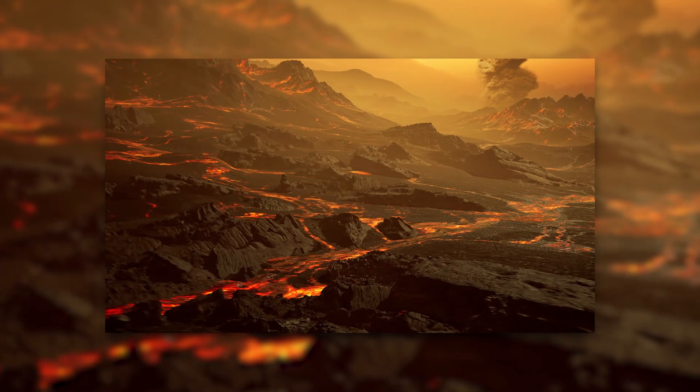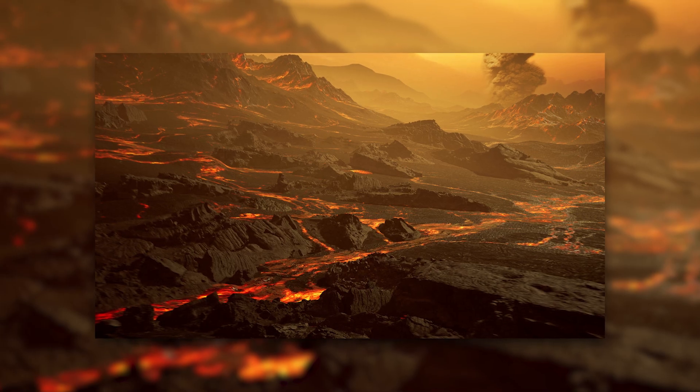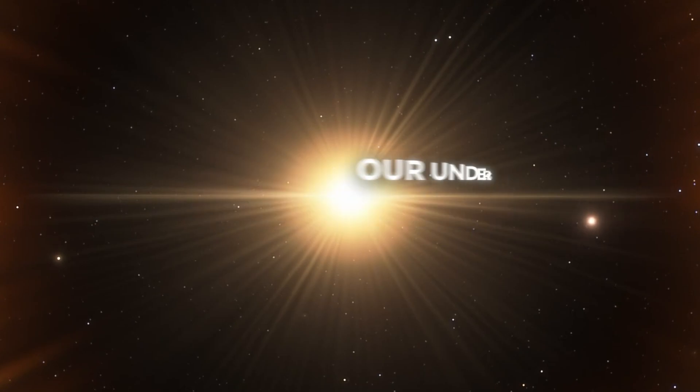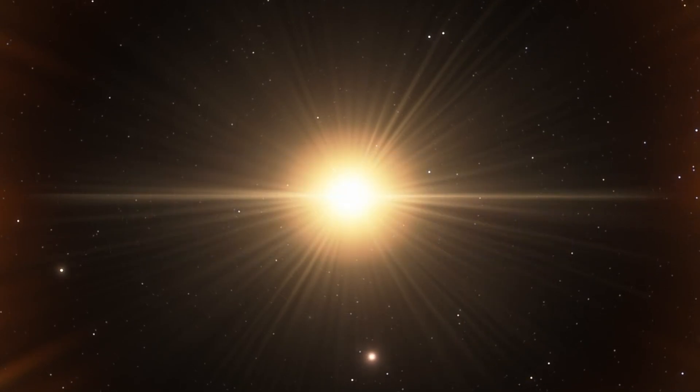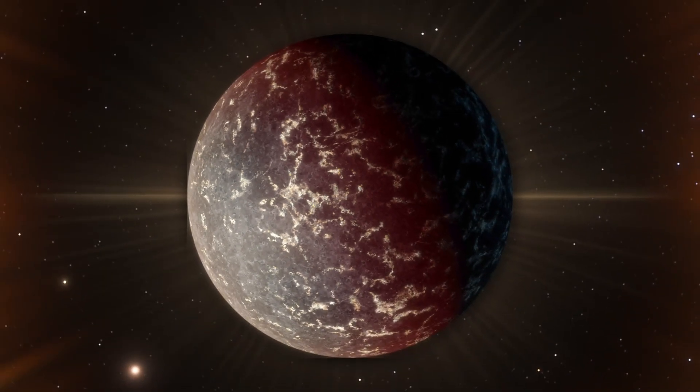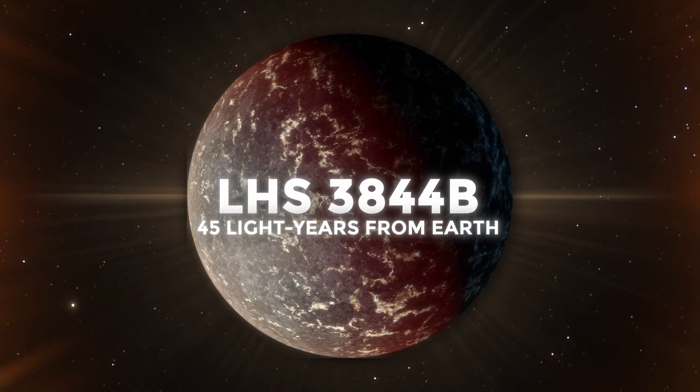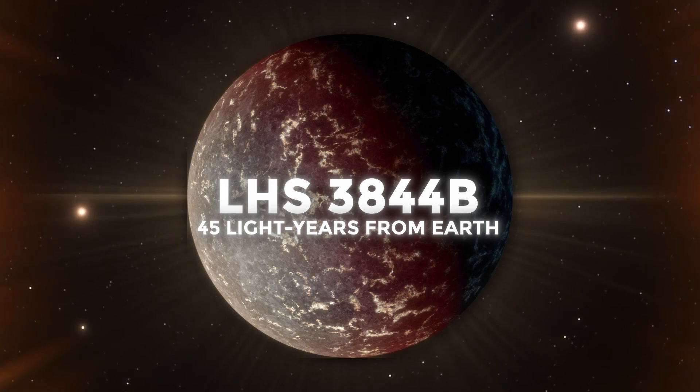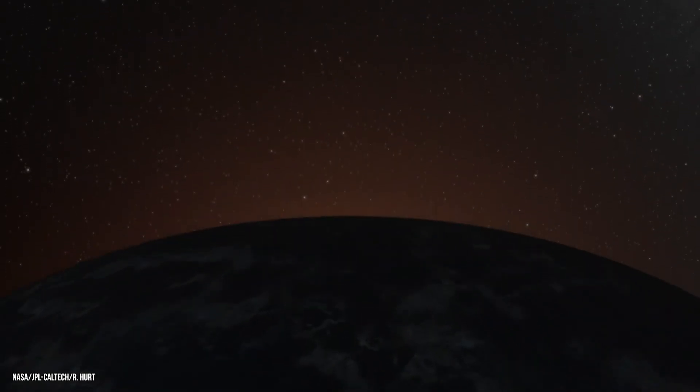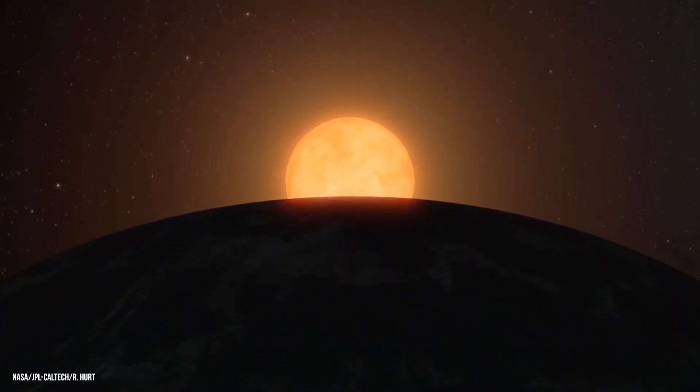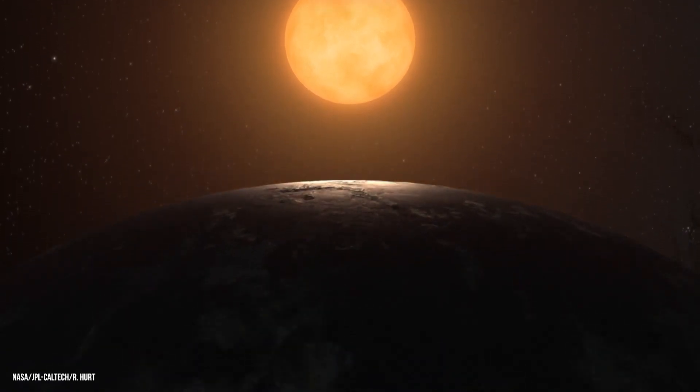A planet with ceaseless volcanic eruptions. Astronauts and scientists have uncovered startling findings that challenge our understanding of the universe. One such discovery is on the exoplanet LHS 3844 b, 45 light-years from Earth, where an unusual and rather disturbing phenomenon has been theorized. LHS 3844 b, a rocky planet slightly larger than Earth, possesses a stark duality that is nothing short of extraordinary.